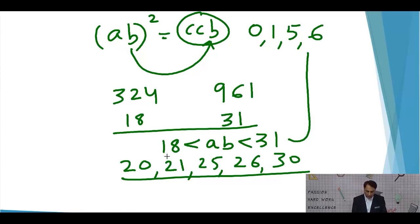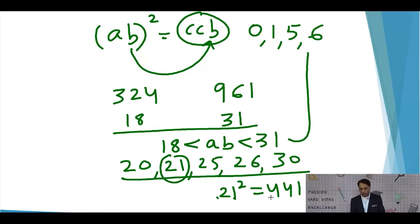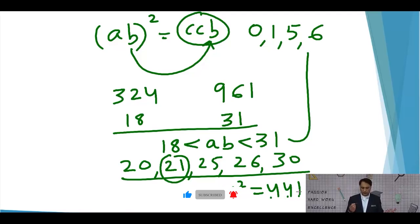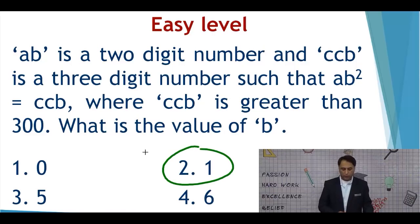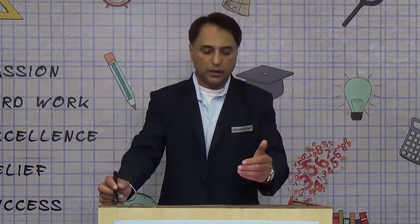The possible values AB can take are 20, 21, 25, 26, and 30. Of these five values, only 21 is the number which when squared ends in 1. So 21² = 441, meaning AB = 21 and CCB = 441, giving C = 4. Going back to the options, the answer is option 2, which is B = 1. This was a case where only two steps were required to solve the question.